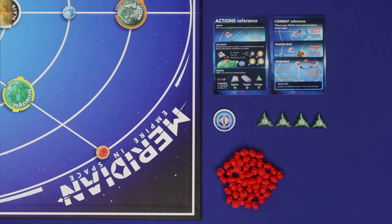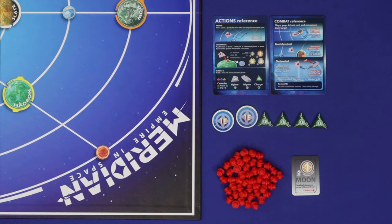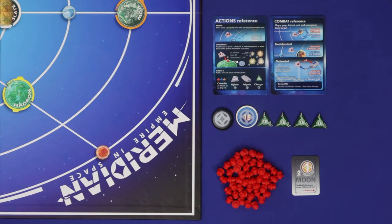Cells count as permanent energy, and players will gain them as they colonize moons and planets on the board. To use a cell to pay for an energy cost, flip the cell over to its expired side. All cells are renewed and flipped over to their available side at the start of each of your turns.